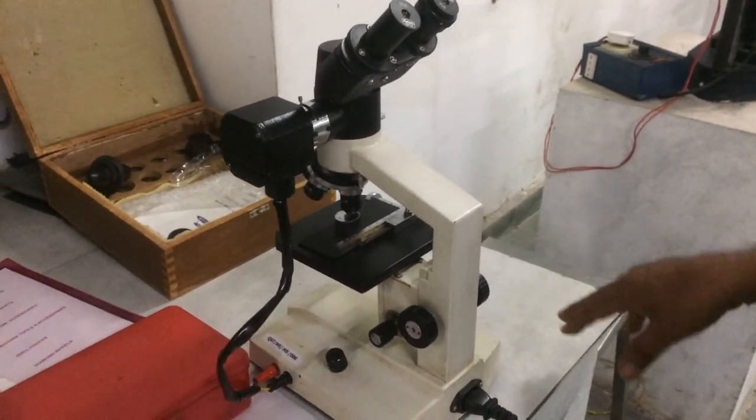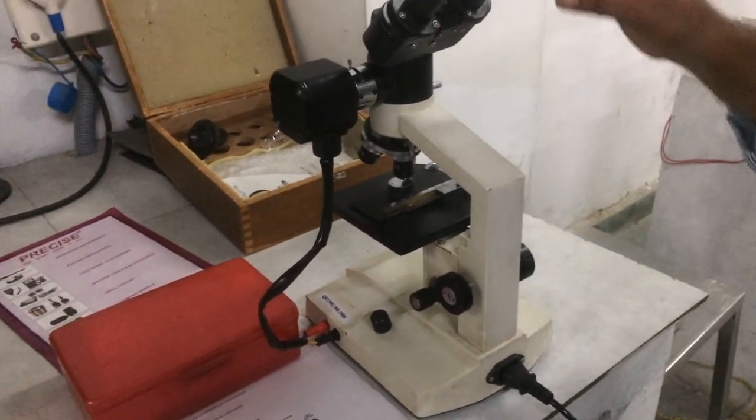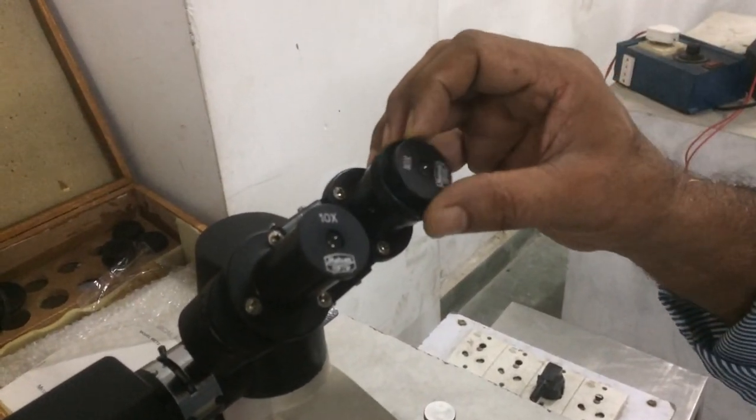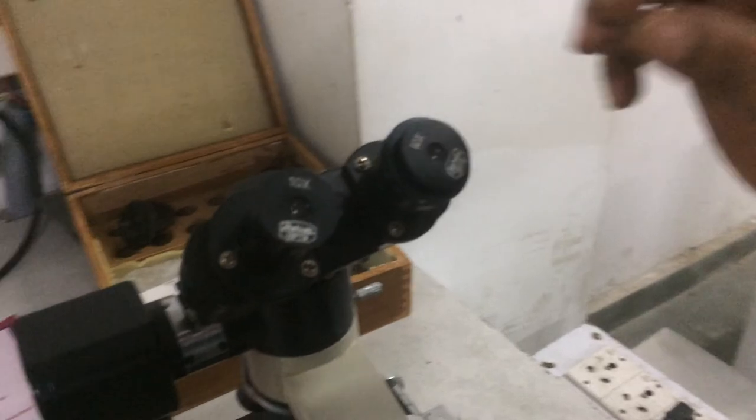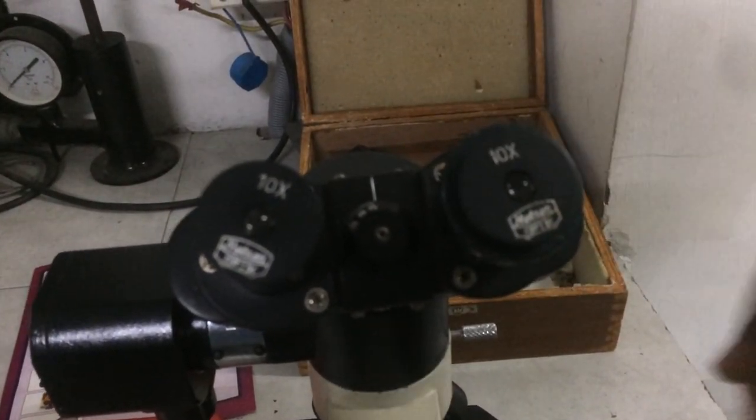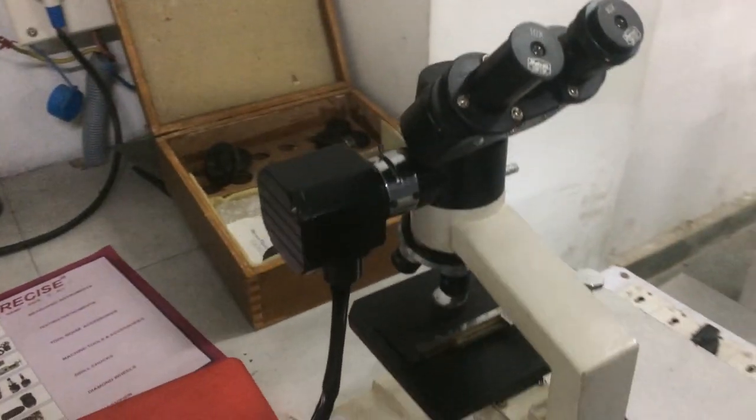The apparatus is shown in the video. We will just see that this eyepiece. It is numbered in 10x, 15x, 100x. So this eyepiece is shown in the 10x. 10x it will show the object picture.